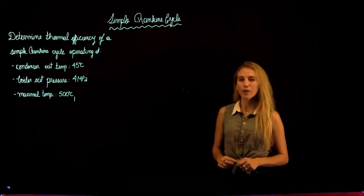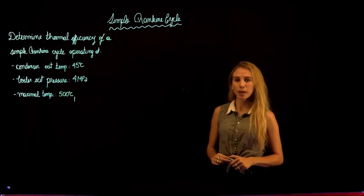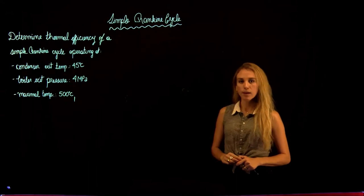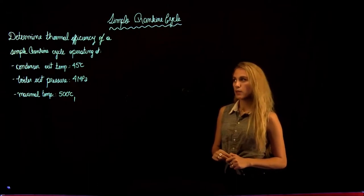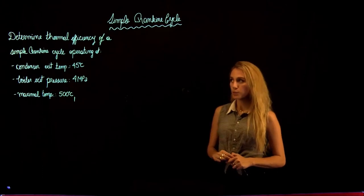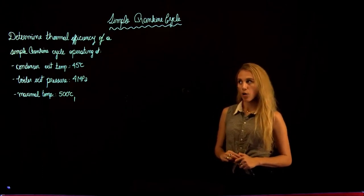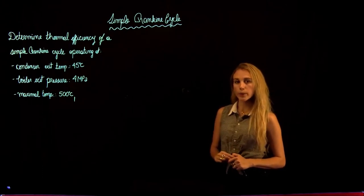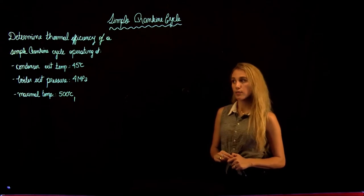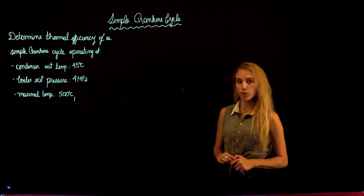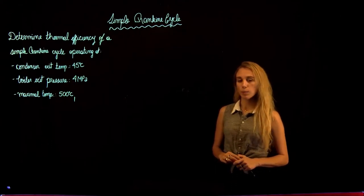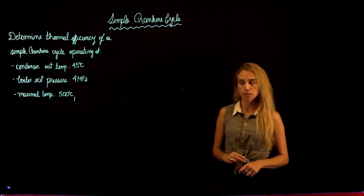Hello everybody and welcome to Thermodynamics 2 tutorials with Maria. We are going to be solving a sample Rankine cycle problem to determine the thermal efficiency of a Rankine cycle operating at a condenser exit temperature of 45 degrees Celsius, a boiler exit pressure of 4 MPa, and a maximum temperature of 500 degrees Celsius.